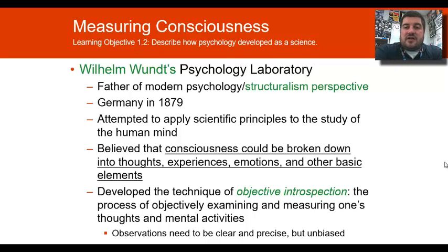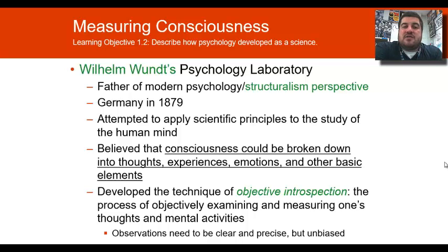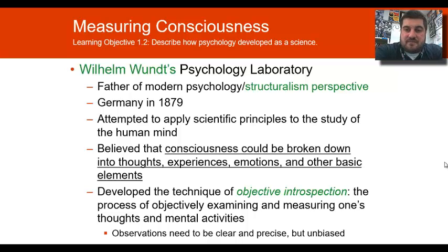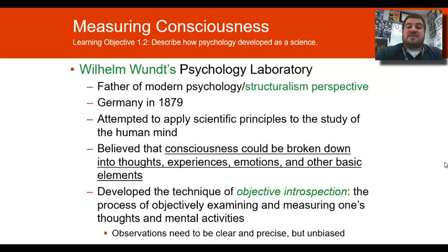How did psychology develop? They've been doing psychology since Aristotle, and it basically comes out of philosophy. But we first tried to scientifically study psychology in 1879 in Leipzig, Germany, with Wilhelm Wundt's psychology laboratory. He is considered the father of modern psychology and the structuralism perspective. He was the first to attempt to apply scientific principles to the study of the human mind.